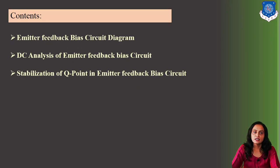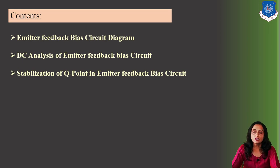These are the contents I am going to discuss in this particular video. First we will see the emitter feedback bias circuit diagram, then we will do the DC analysis of this emitter feedback bias circuit — finding the quiescent point coordinates — and at last we will see how the stabilization of the Q-point is achieved in this emitter feedback bias circuit.